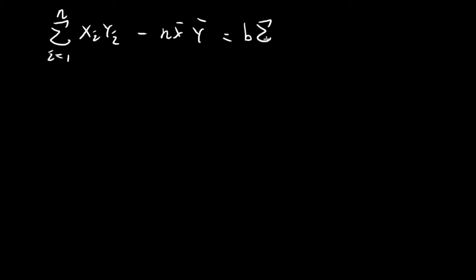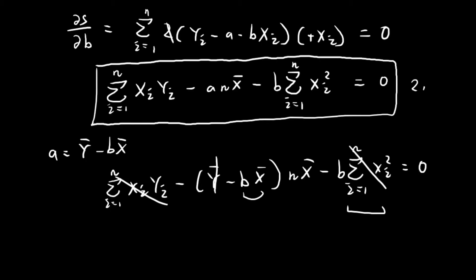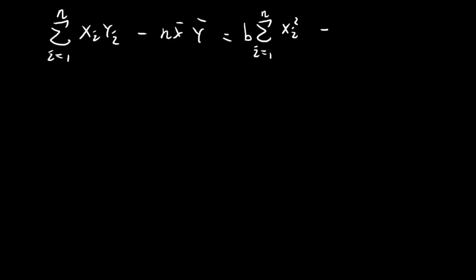For the remaining terms with B attached, we shift them to the right. We have B times the sum of all xi squared, and also the sample mean of x squared times n. The two negative signs combine to give a plus, so once moved to the other side we get minus B times n times the sample mean of x squared.